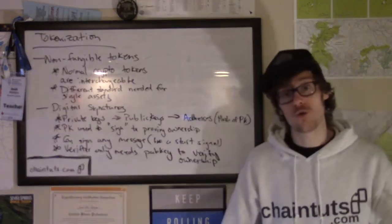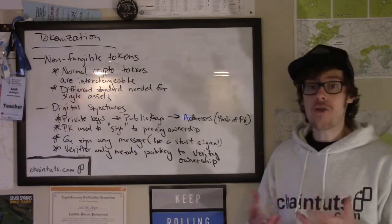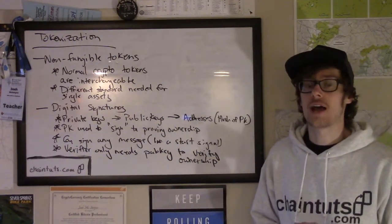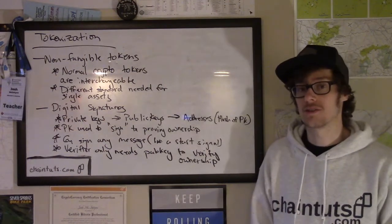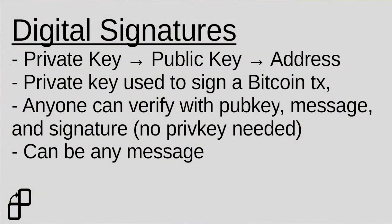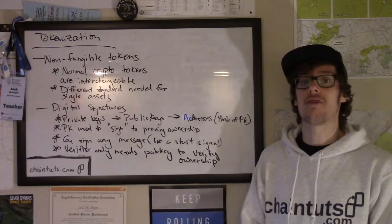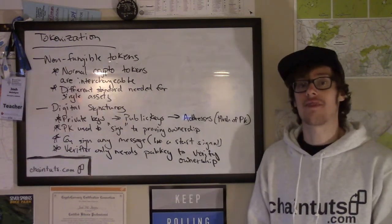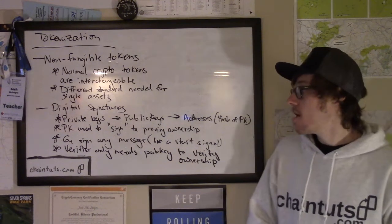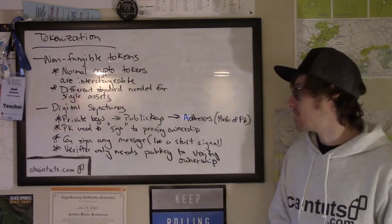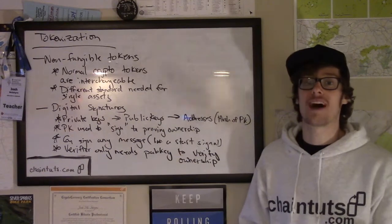When we talk about Bitcoin or Litecoin transfers, that transaction you're signing is just a particular type of message being input into the signing algorithm. A digital signature algorithm can sign any arbitrary message. So in the case of tokenization, that could be some kind of message used by a door lock or a starter system on a lawn tractor or car to verify that you own the key for the public address that that asset is owned at. The verifier only needs the public key to verify ownership along with that signed message.